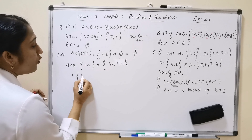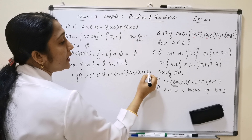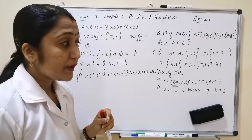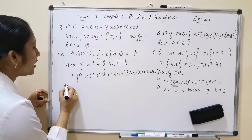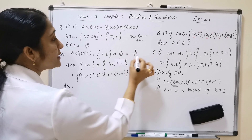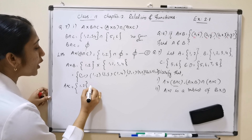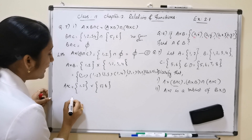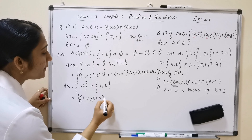Now we find the right-hand side. First, A×B = {1,2} × {1,2,3,4} = {(1,1),(1,2),(1,3),(1,4),(2,1),(2,2),(2,3),(2,4)}. These are the ordered pairs in A×B.